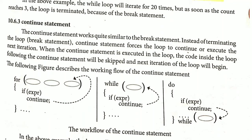The continue statement works quite similar to the break statement, but instead of terminating the loop it forces the loop to continue and execute the next iteration. It skips only the remaining statements inside the body of the loop for that iteration — it does not break out of the entire loop. The control is transferred to the beginning of the loop so the next iteration will begin.